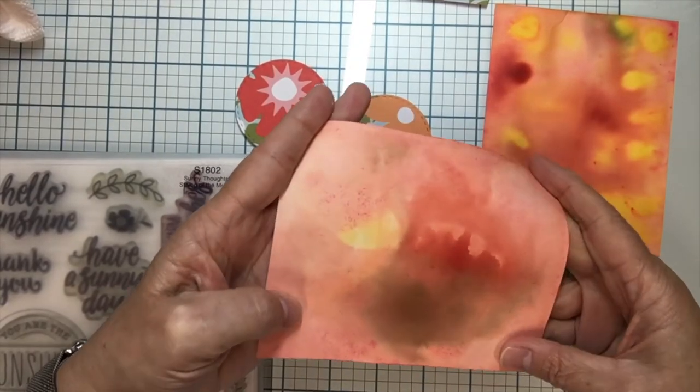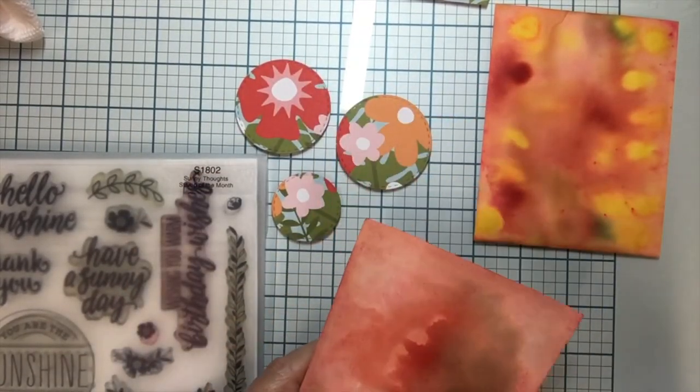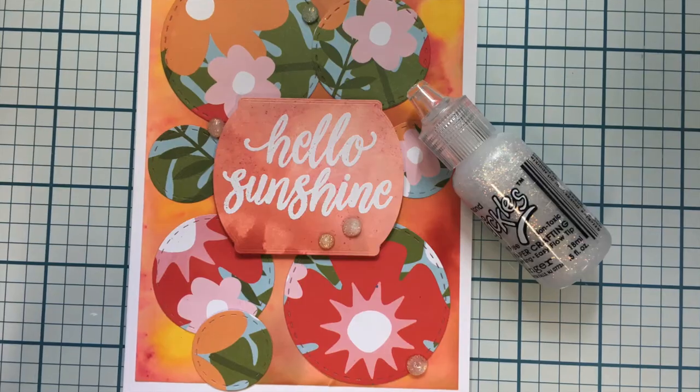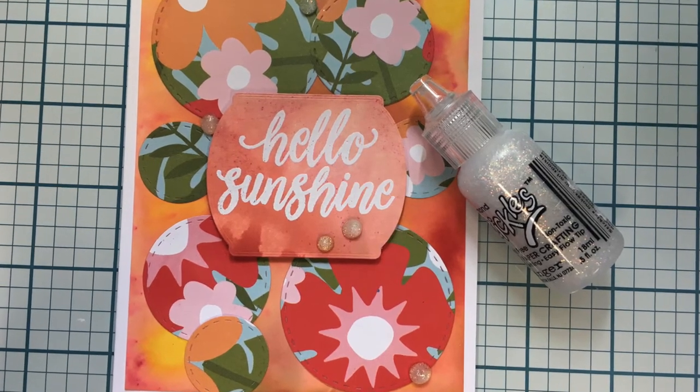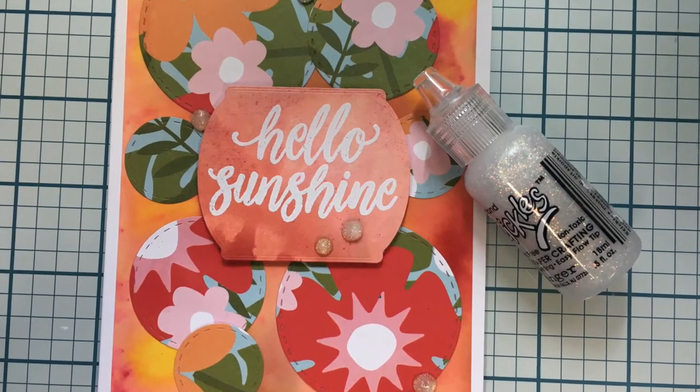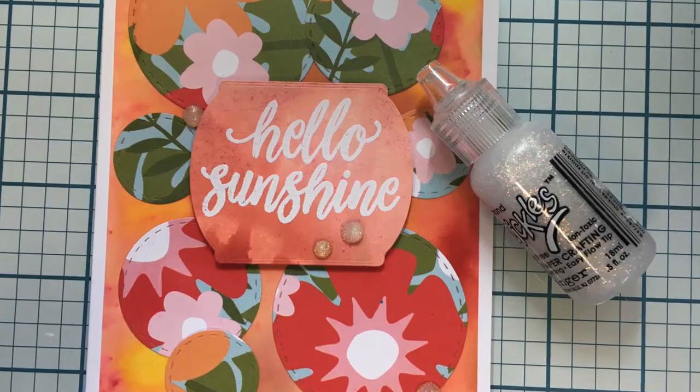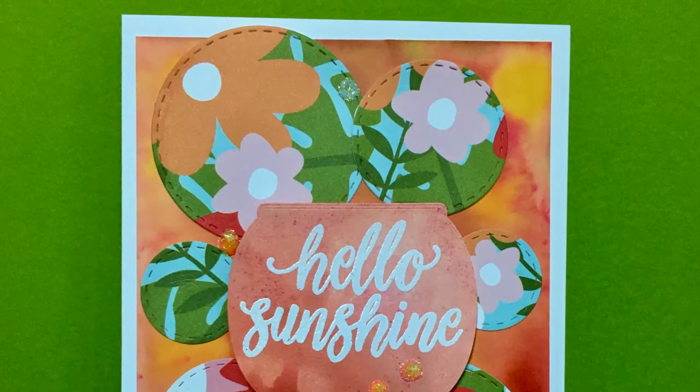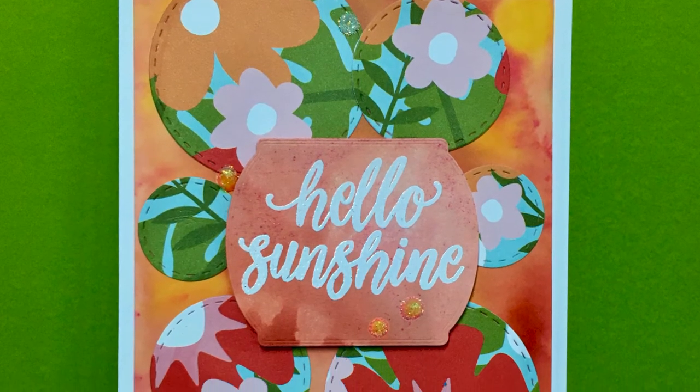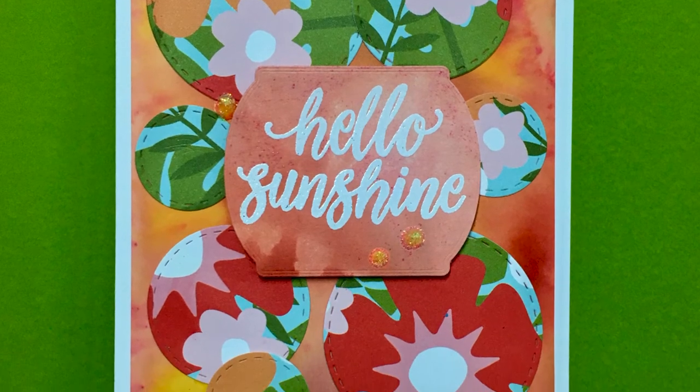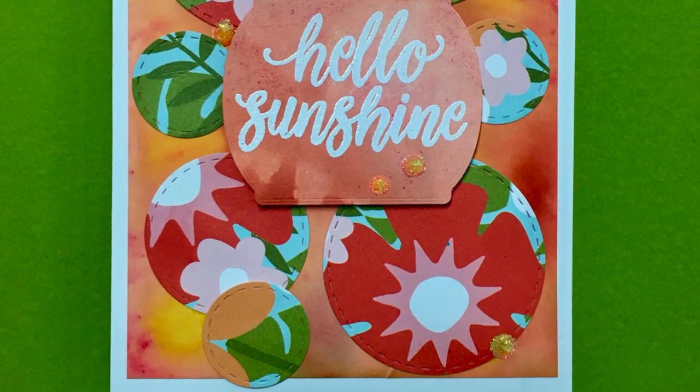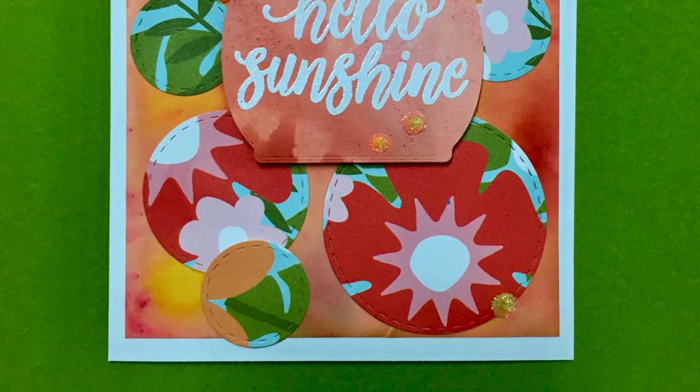There's the first piece that I did, it's still pretty ugly. So I just used it to make my Hello Sunshine sentiment. I cut the corner off and did some white embossing, and there's the card using Summer Vibes paper. The background you saw me make, and then the one for the sentiment that I wiped up on my work surface.